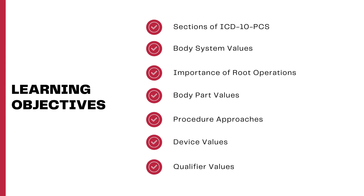At the end of this learning session, we will have a better understanding of the different sections of the PCS, the different body system and body part character values, root operations and their importance in building the code, the approaches used in the PCS, and the definitions of device and qualifier values. Basically, we are talking about all seven characters of the ICD-10 PCS coding system.